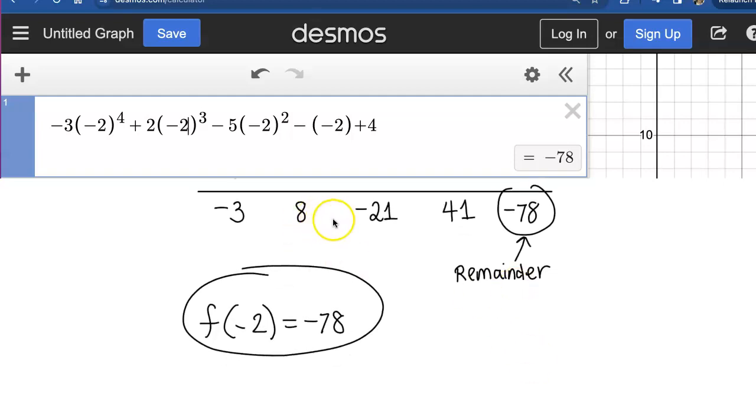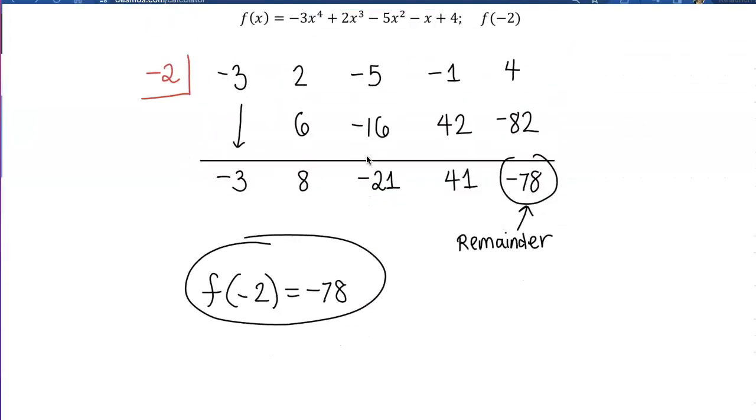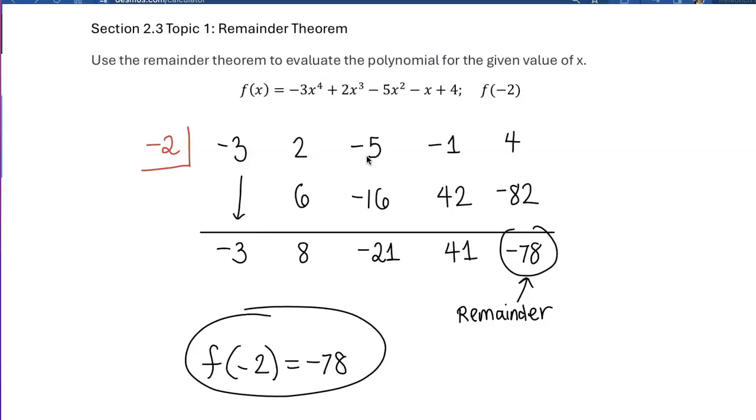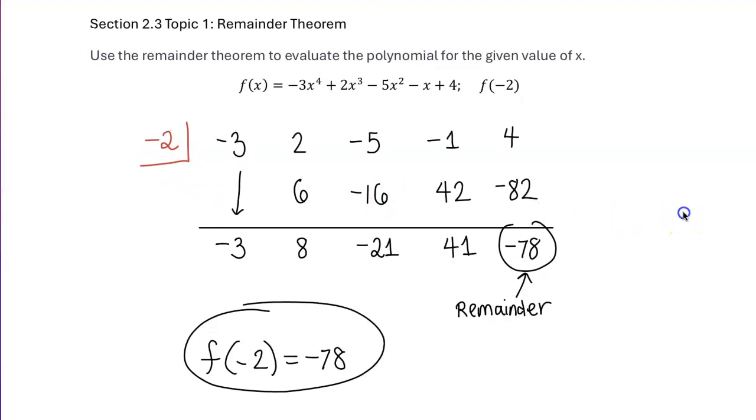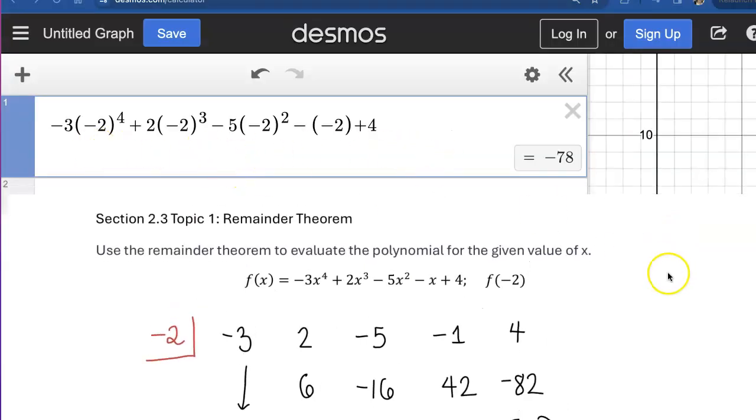Typos happen when taking exams or doing homework, so it's good to have a second method. Honestly, if I'm evaluating a function, I'll just plug it in if I have a calculator. But when using synthetic division, we didn't need a calculator to multiply by negative 2 or add. You can use the remainder theorem to evaluate a function instead of direct substitution.